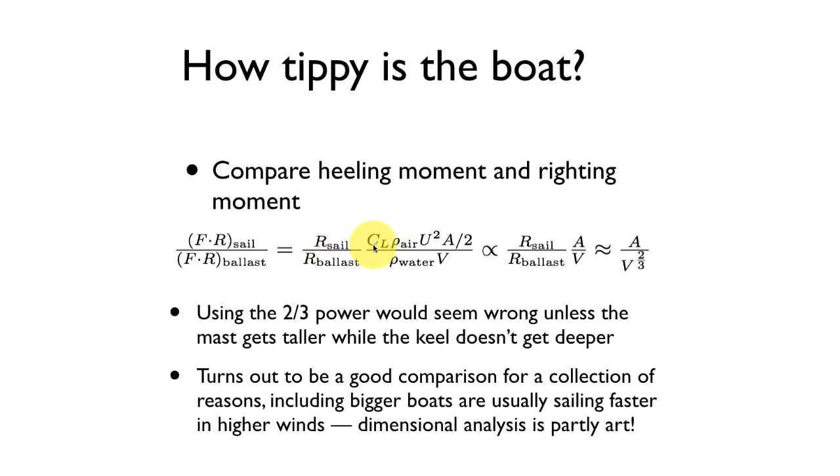The sail force will have something to do with a lift coefficient of the sail, the density of the air, the wind velocity squared, the area of the sail, all divided by two. That's something we'll see later in looking at lift and drag coefficients.